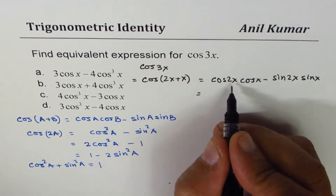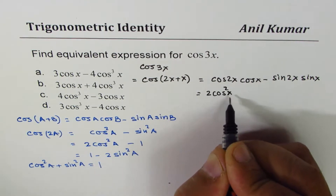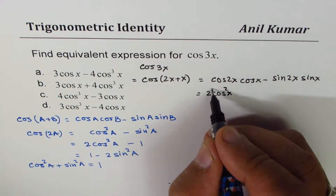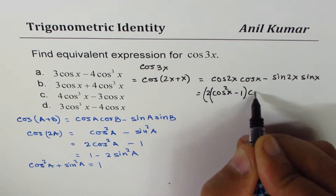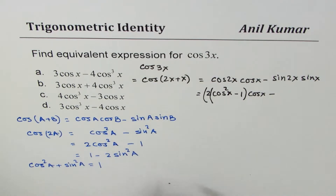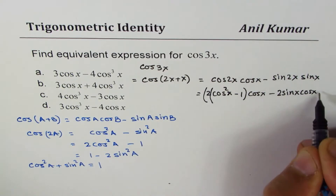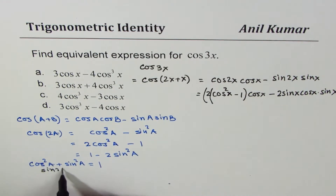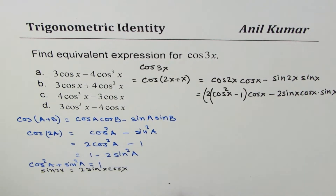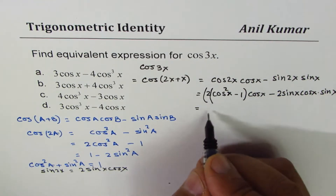Now, cos 2x = 2 cos² x − 1, so we substitute that times cos x. And sin 2x = 2 sin x cos x, so we have minus 2 sin x cos x times sin x.